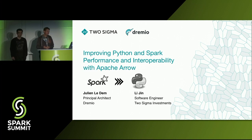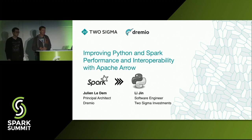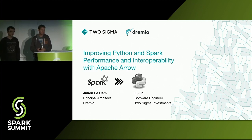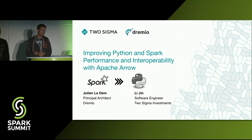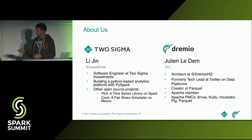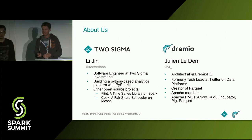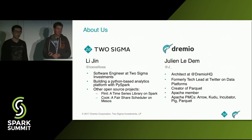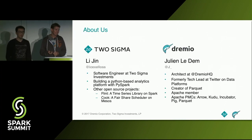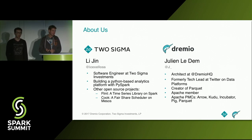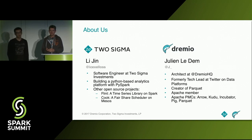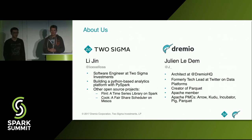We're going to talk about improving Python and Spark performance and interoperability using Apache Arrow. My name is Li Jing. I'm a software engineer working for Two Sigma Investment, a technology company that applies data science to finance.